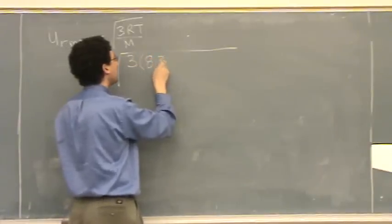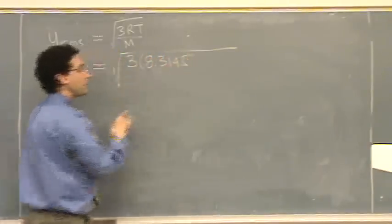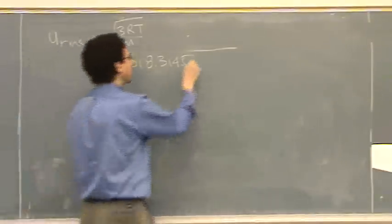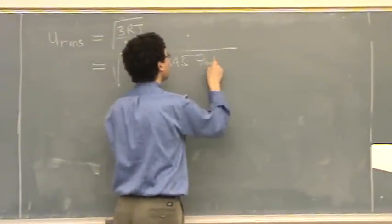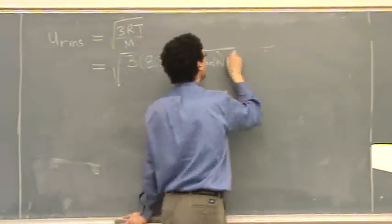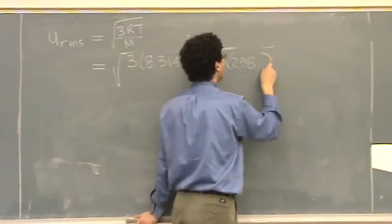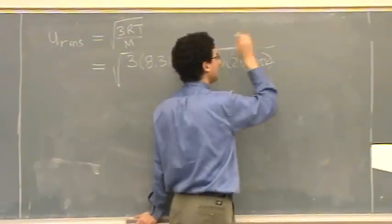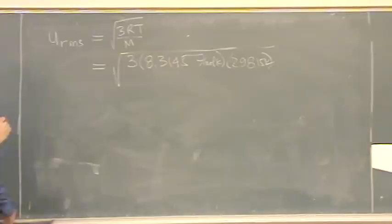We want to use this R, 8.3145 joules per mole Kelvin. T, 298. You can put the 1,5 in there if you want. That's fine if you want five digits.